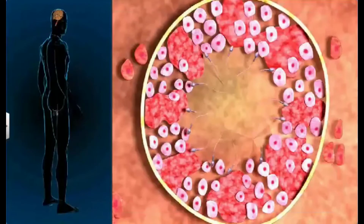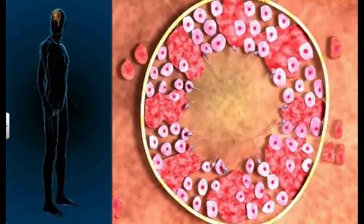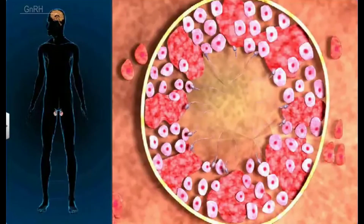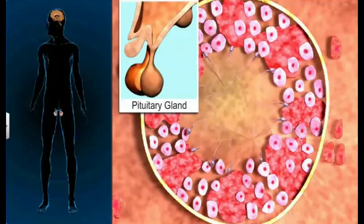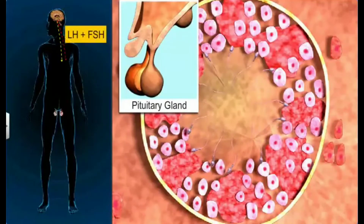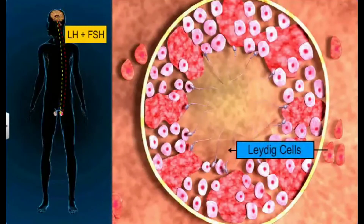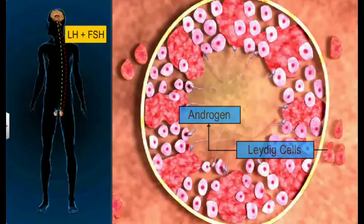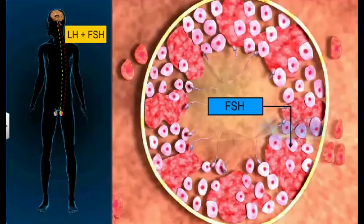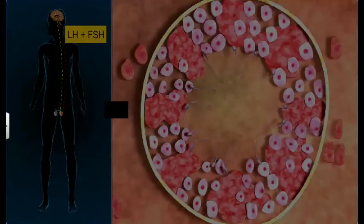These mitochondria break down glucose in the semen to produce ATP, an energy molecule that powers the movement of the sperm's tail. The formation of sperm is triggered when the hypothalamus secretes high levels of gonadotropin-releasing hormone, or GnRH. This GnRH acts on the anterior pituitary gland and stimulates the secretion of luteinizing hormone (LH) and follicle-stimulating hormone (FSH). LH in turn stimulates the Leydig cells to synthesize and secrete androgen, a hormone that triggers spermatogenesis.